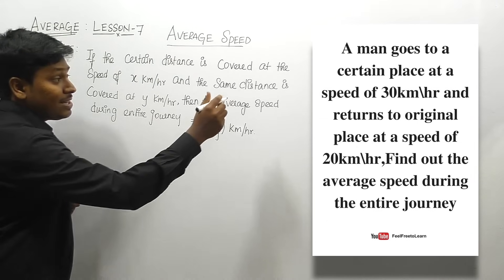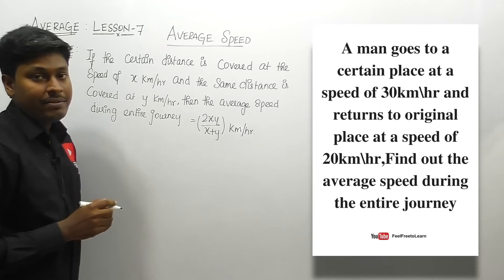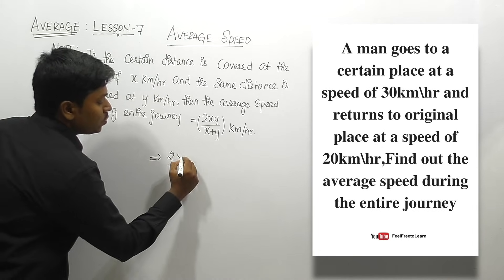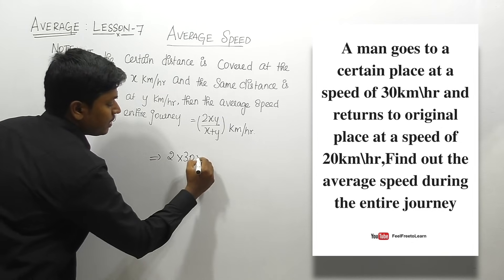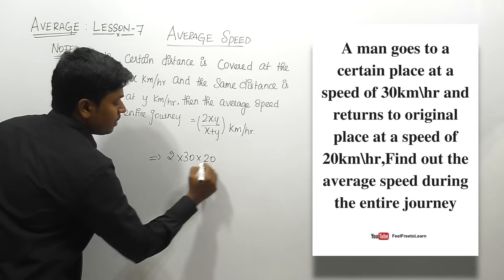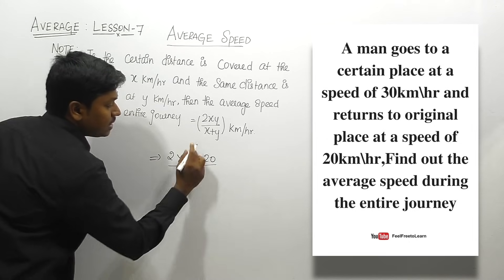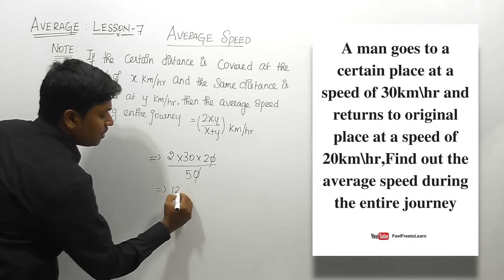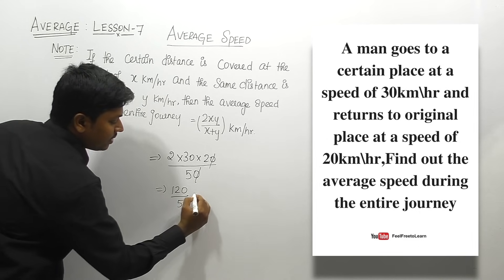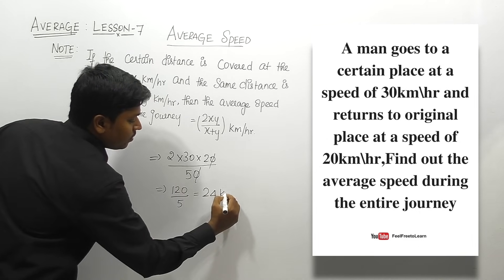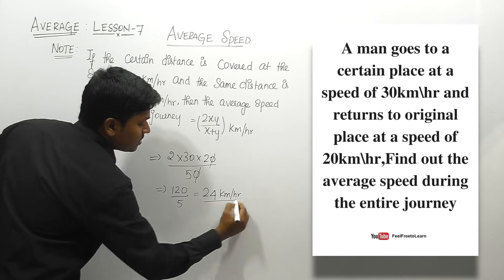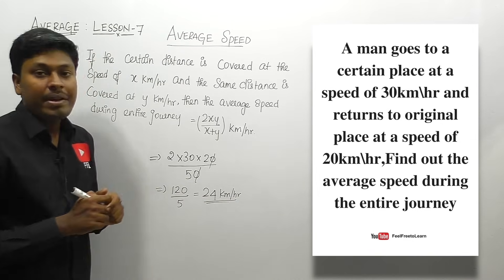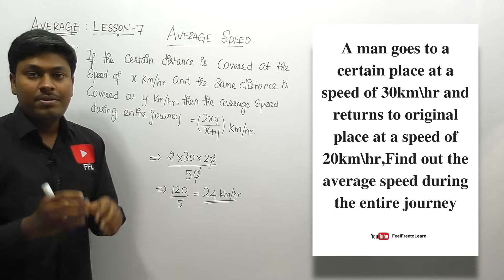The value of x is 30 kilometers per hour and y is 20 kilometers per hour. Applying the formula: 2 × 30 × 20 divided by 30 plus 20, which is 1200 divided by 50. Cancelling gives 120 divided by 5, which equals 24. So the average speed of the entire journey is 24 kilometers per hour.